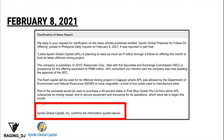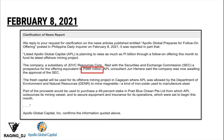On February 8, 2021, the latest disclosure clarified the news report that Apollo Global prepares for a follow-on offering, as posted in the Philippine Daily Inquirer. According to the news, APL is planning to raise as much as 988 million pesos through a follow-on offering this month to fund its latest offshore mining project. Importantly, Apollo Global Capital Incorporated confirmed this information — the follow-on offering is confirmed. A subsidiary, JDBC Resource Corporation, filed with the SEC a prospectus for the offering equivalent to 988 million pesos, which is now awaiting SEC approval.